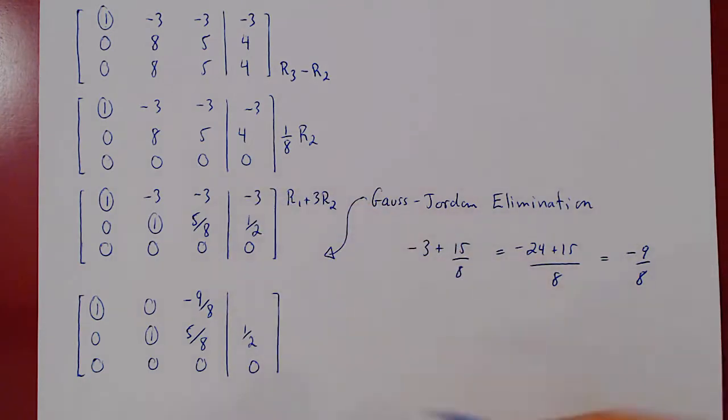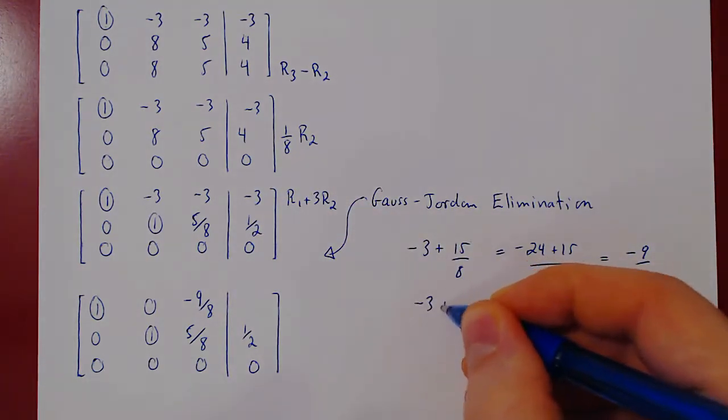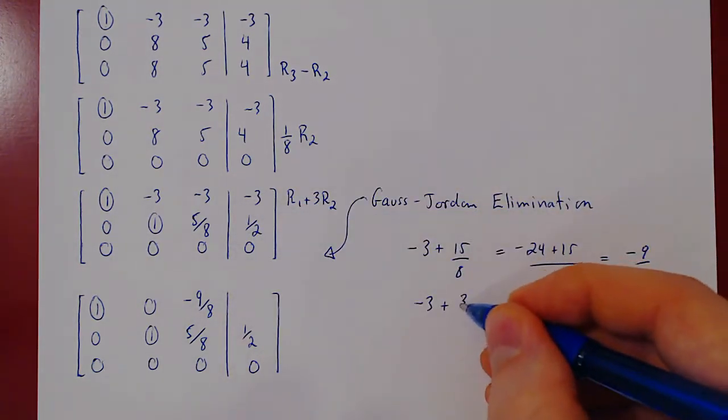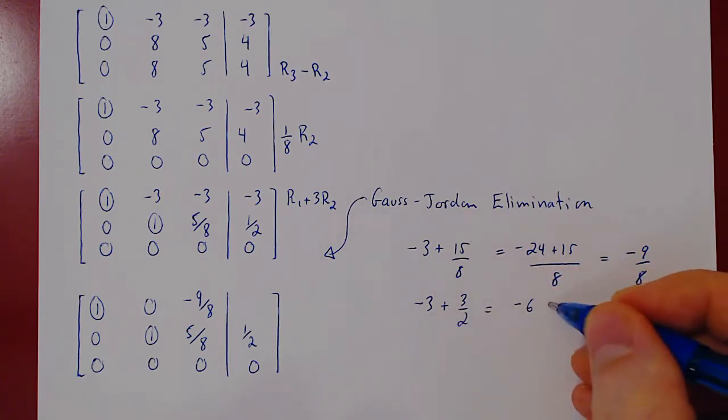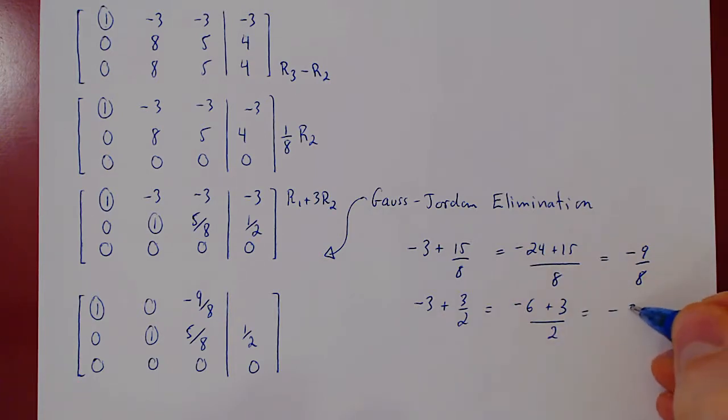And here, negative 3 plus 3 times 1 half, so plus 3 over 2, gives us negative 6 plus 3 over 2, which gives us negative 3 over 2.